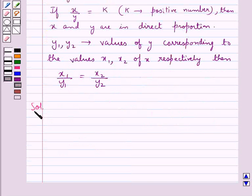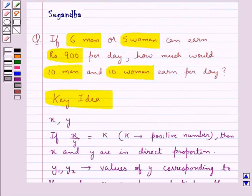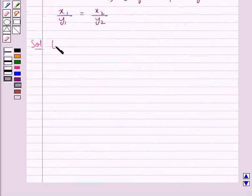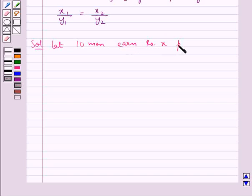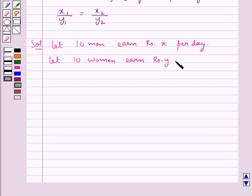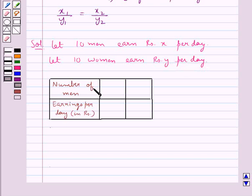Now let's proceed with the solution. We need to find how much 10 men and 10 women would earn per day. So we let 10 men earn Rs. X per day and let 10 women earn Rs. Y per day. Now consider a table in which we have number of men and their earnings per day in Rs.